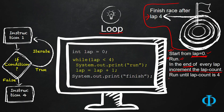You will keep on running until the lap count hits 4. And whenever it is 4, your race is finished and you can come out of the racing track. That means you can break the loop of the race. That is a real-world example.